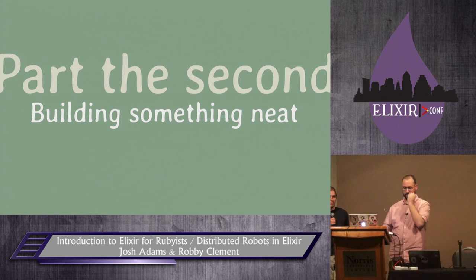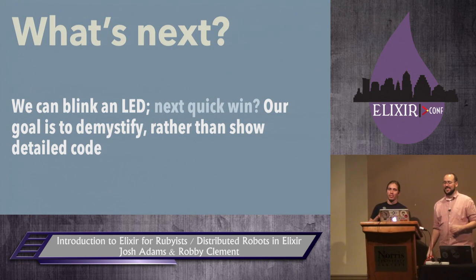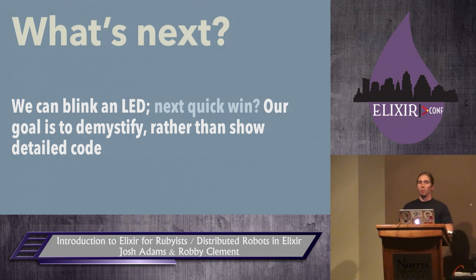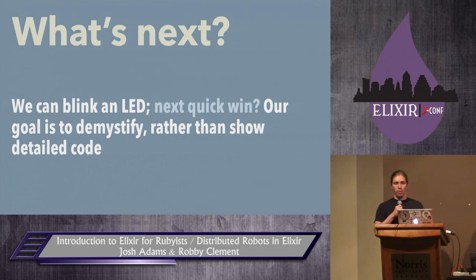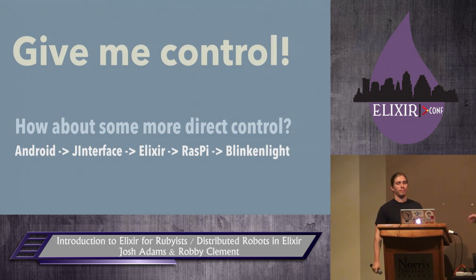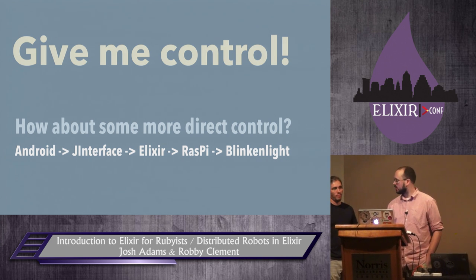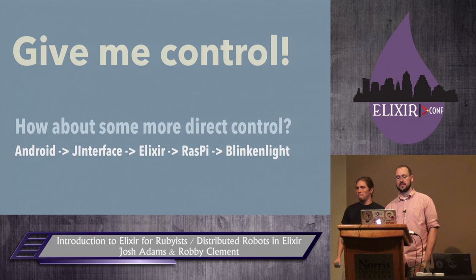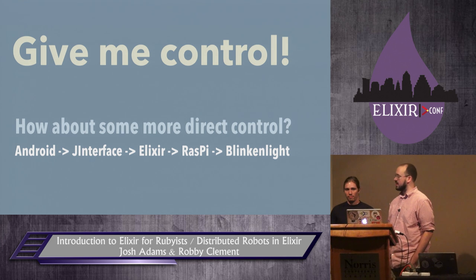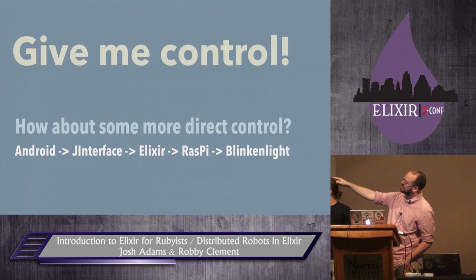So we're going to move on to the second part where we actually build something. We got some easy wins with these toys and showed how to make an LED blink, but we can do better. Our goal is not going to be to provide all code examples — all our code is on GitHub. So blinking an LED from Elixir is cool, but how can you get more direct control? Instead of a custom serial protocol, one of the Beam's big selling points is distribution. What I wanted was to communicate from an Android device directly to a remote Erlang process. Thanks to JInterface, which ships with Erlang, we can go from Android using JInterface, talk directly to an Elixir process remotely, and have it control Raspberry Pi GPIO to blink a light.